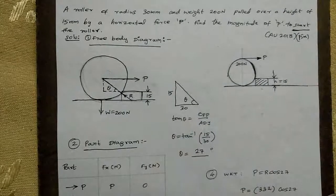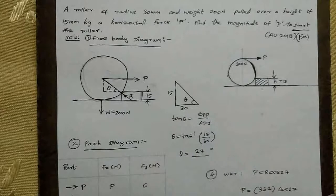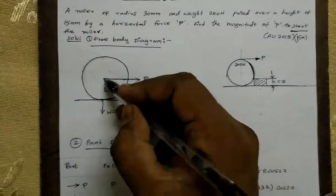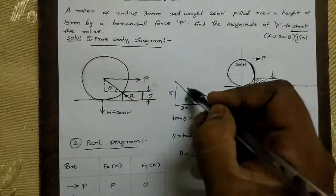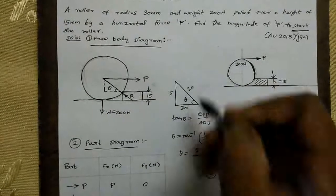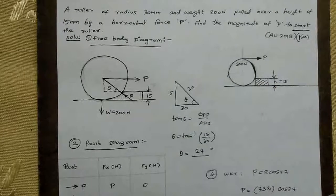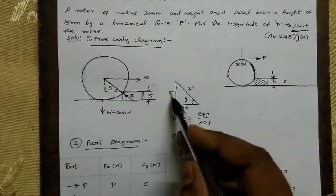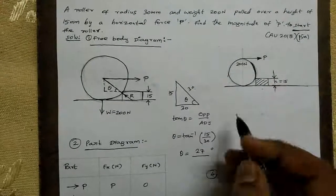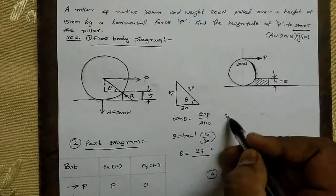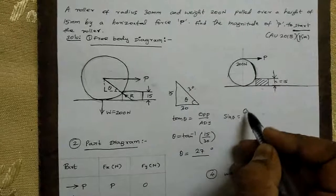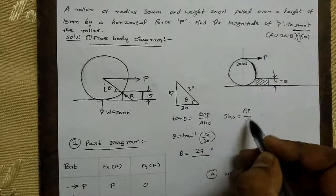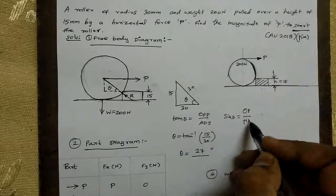This is your opposite side, this is your adjacent side, and we can use sin theta equal to opposite divided by hypotenuse to find the angle.